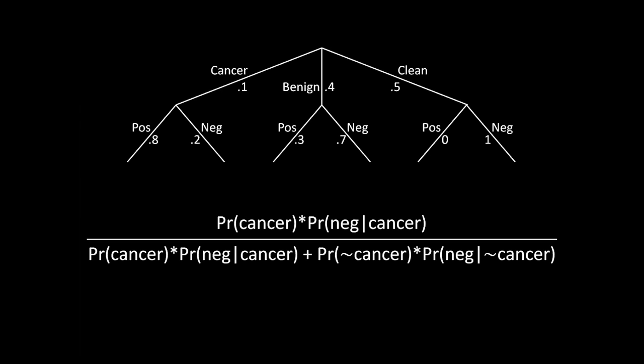In the numerator, we have the probability that you have cancer times the probability of getting a negative result given that you have cancer. We divide by that same value plus the probability of not having cancer times the probability of getting a negative screening given you don't have cancer. The interesting addition now is that there are multiple ways the second part of the denominator can arise — you can have a benign tumor and still be cancer-free, or you can be completely clean.